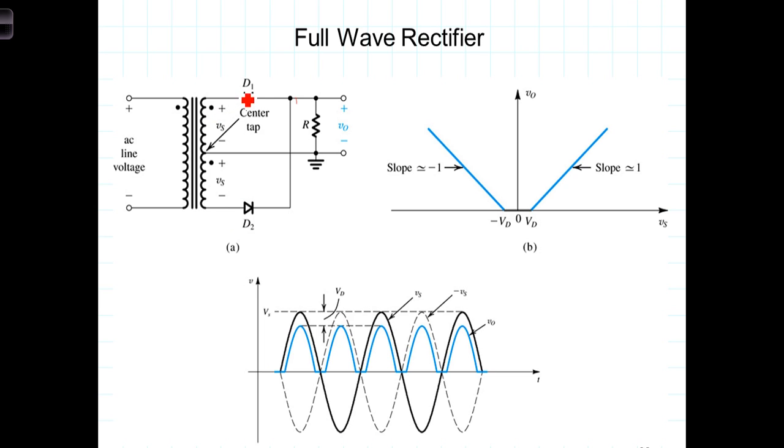During the positive half of the cycle, diode 1 conducts and brings a positive voltage to the load. With this positive voltage here and this then with a negative reference to ground, D2 is reverse biased.